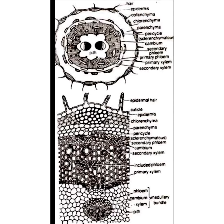The third tissue is the endodermis, which is the innermost layer of cortex. It consists of elongated cells which lack casparian thickening. In monocot and dicot stems, casparian thickenings are normally present, but here they are absent. Additionally, in the old stem of Achyranthus, the endodermis is not clearly defined.